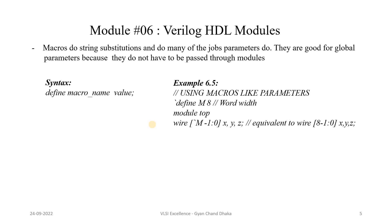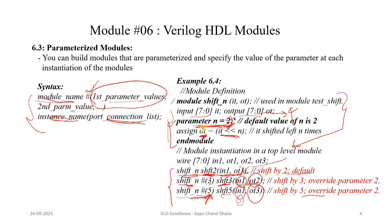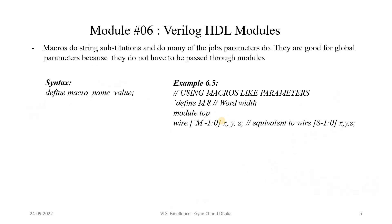Now let's see another concept: macros. A parameter is essentially a way to define a constant value. We can also do similar things using macros. Macros perform string substitutions and handle many of the same jobs as parameters, but they are good for global parameters because they do not have to be passed through modules.